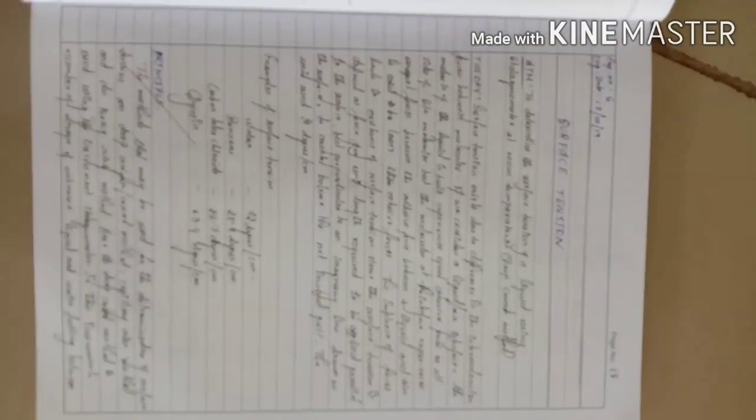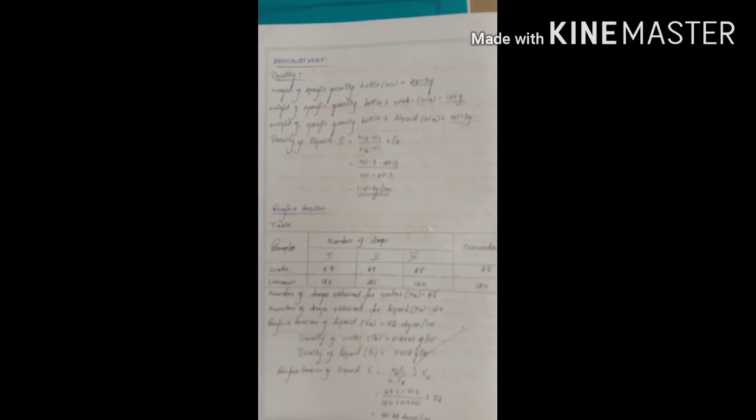Surface tension gamma 1 is equal to n2 into rho 1 divided by n1 into rho 2 into gamma 2, where 2 is water and 1 is unknown liquid.